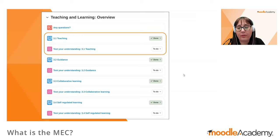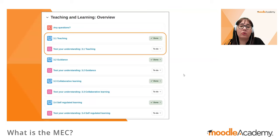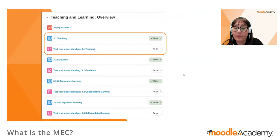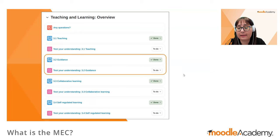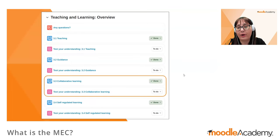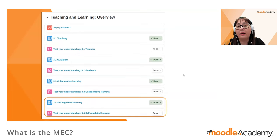The number of book-and-quiz pairs depends on the number of competencies each area has — some courses have three sets, some four, and one has five. The teaching and learning course has four competencies: teaching, guidance, collaborative learning, and self-regulated learning.